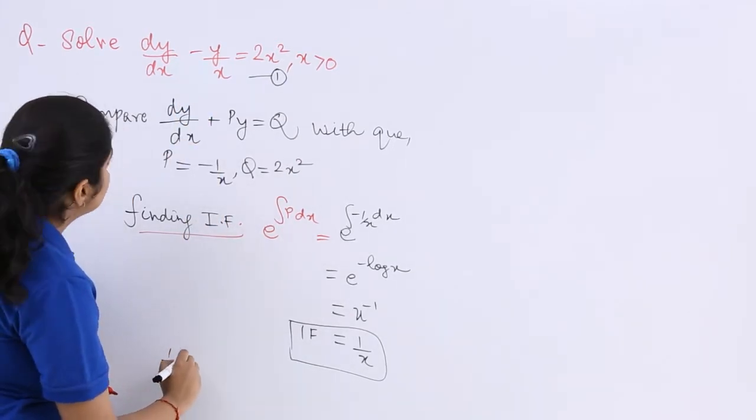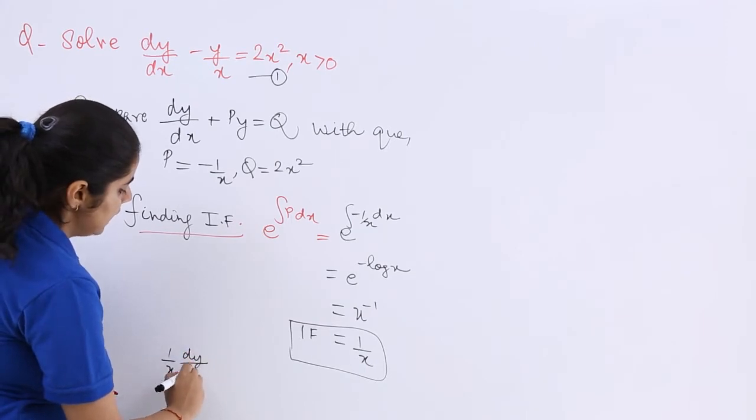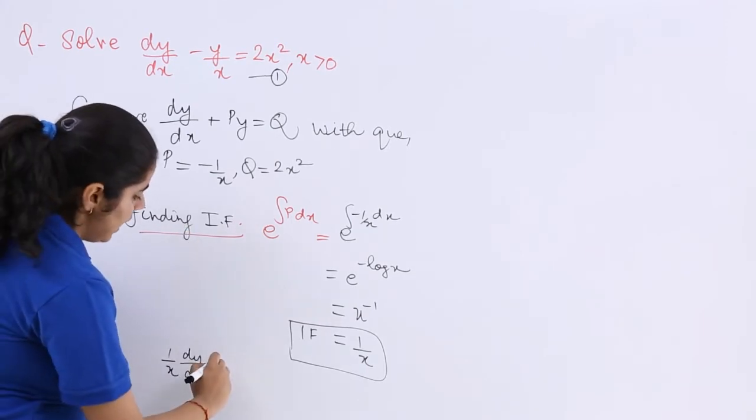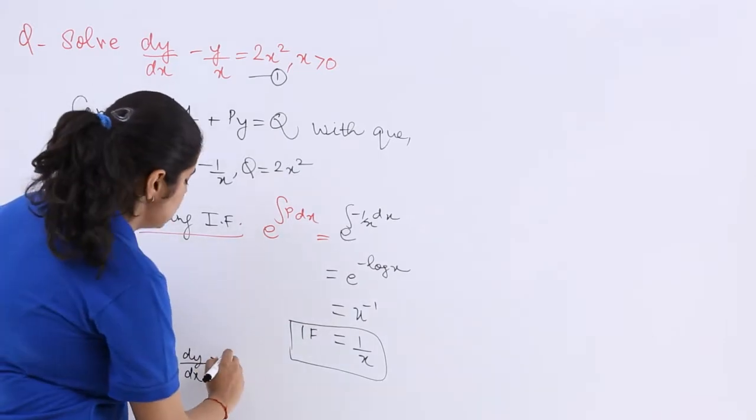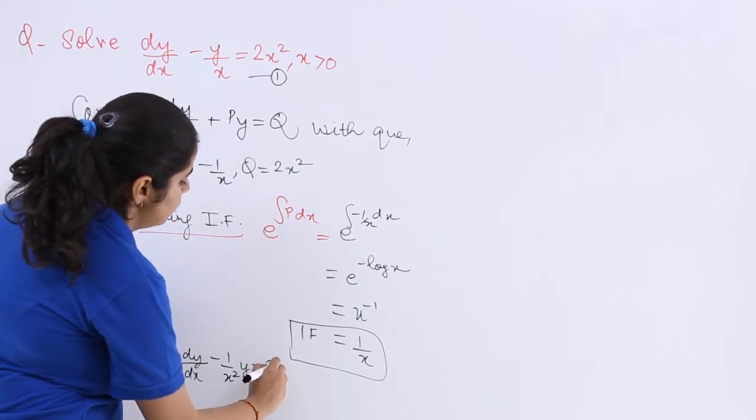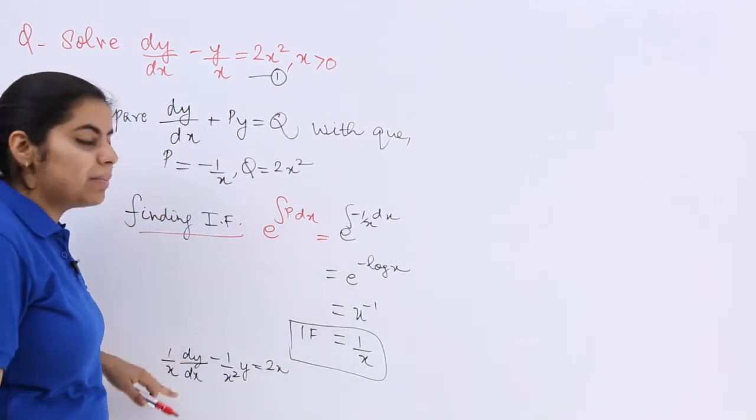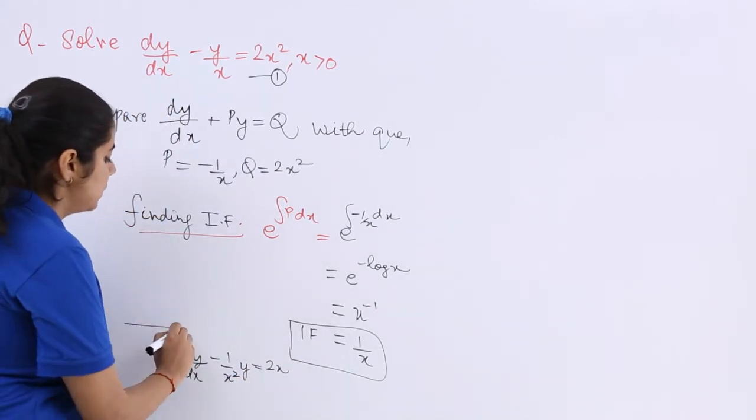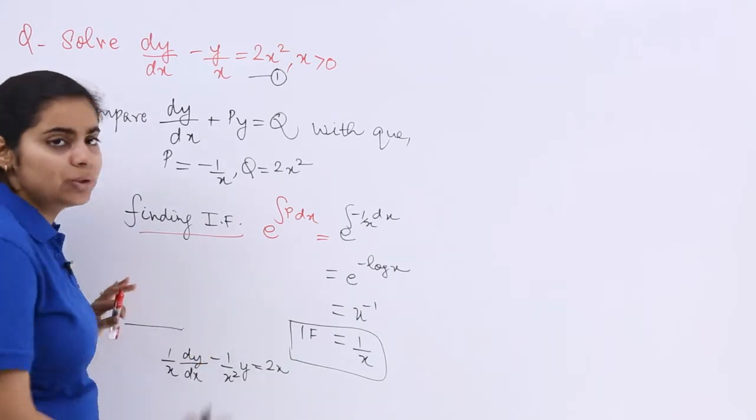So it is 1/x · dy/dx and here also it is 1/x, here also it is 1/x so it is -1/x² · y = 2x because you have to multiply by the integrating factor. You can write yourself.